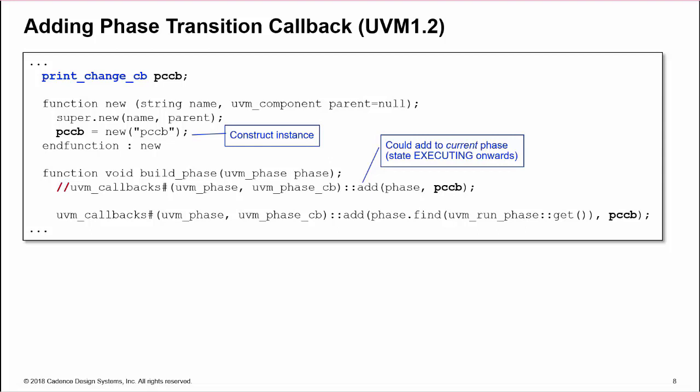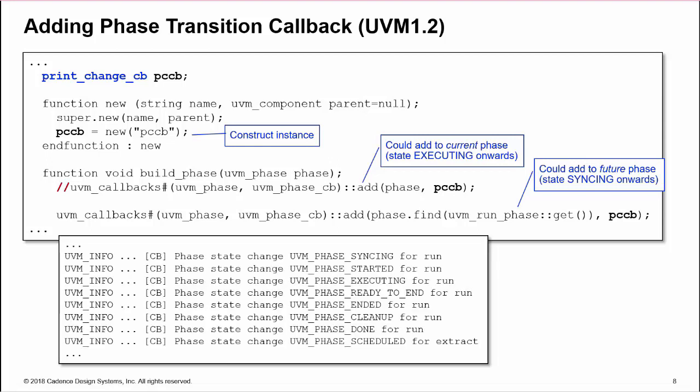However, by waiting until a phase is executed before adding the callback, the callback is only triggered on state changes from executing onwards. You can add the callback to a future phase, by searching from the current phase, using find, with a static get on the future phase name as the search term. The callback will then be triggered on every state change from scheduled onwards. Here we add the callback to run_phase, and report all transitions.